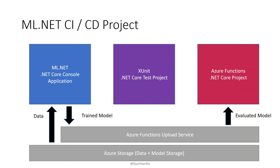If your model is not performing as expected, your continuous integration or continuous deployment pipeline stops and your model is not deployed or saved to a production blob container. However, if it succeeds and your model performs as expected, it gets copied over to a production blob container.